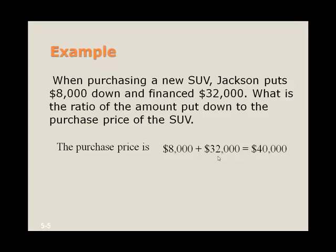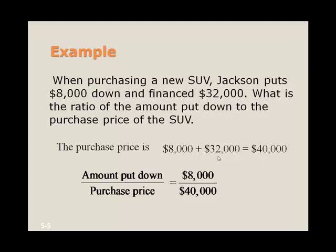Now the ratio is asking us to put the ratio of the amount put down, that's $8,000, to the purchase price, which is $40,000 we just found. And so we write that as a fraction, and that's $8,000 divided by $40,000, and that can simplify as 1 to 5.